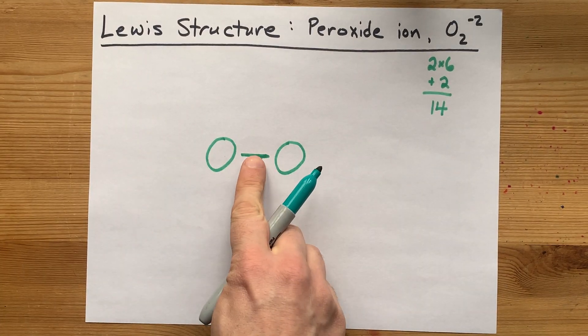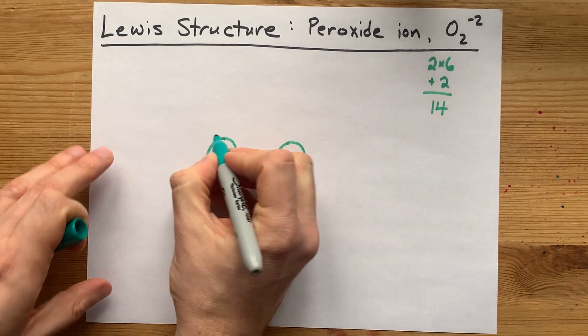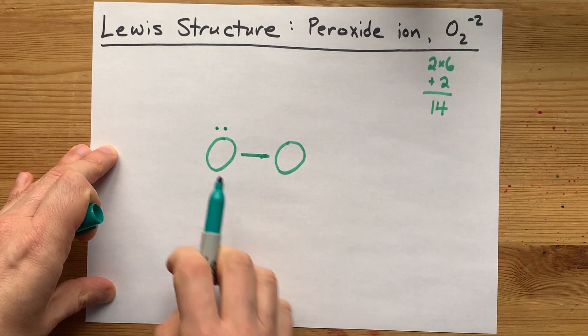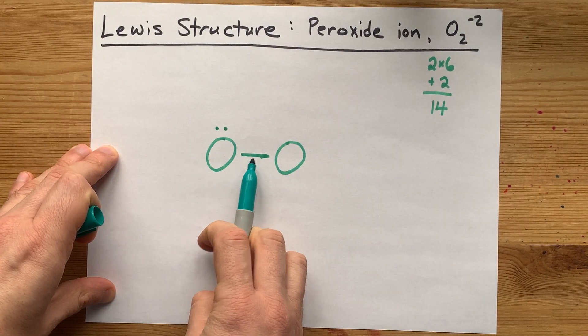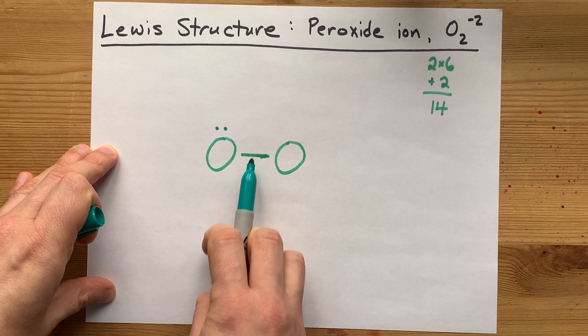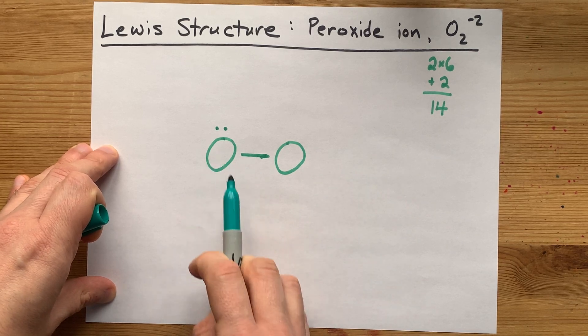That's two electrons. Then I complete the octet on the outer atoms. Remember, the octet rule means that each of the atoms wants eight electrons total. This oxygen already has two because this single horizontal line represents two bonding electrons.